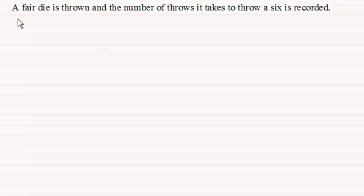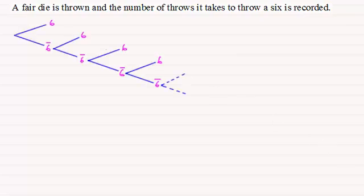This one here where a fair die is thrown and the number of throws it takes to throw a six is recorded. So, I'm assuming that this die is a normal fair six-sided die. Now, if we were to draw a probability tree diagram, it would look something like this, where on the first throw you either get a six or you don't.